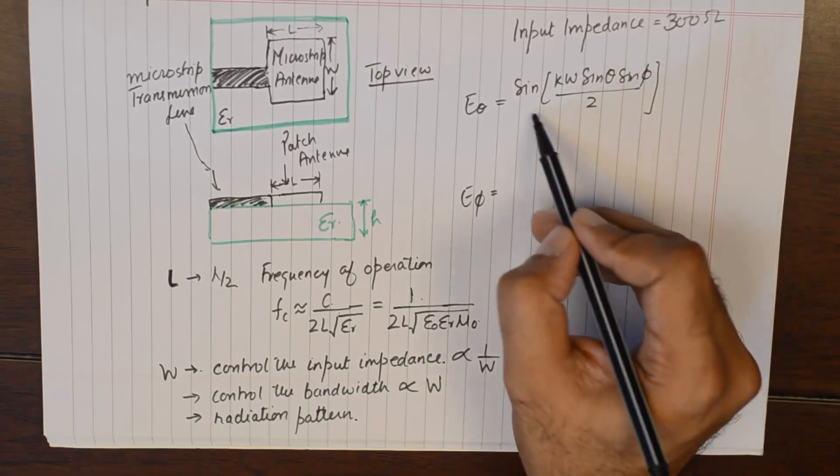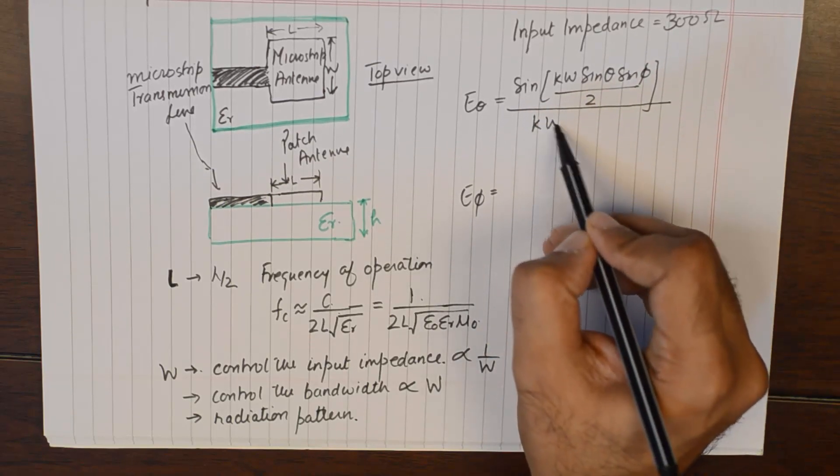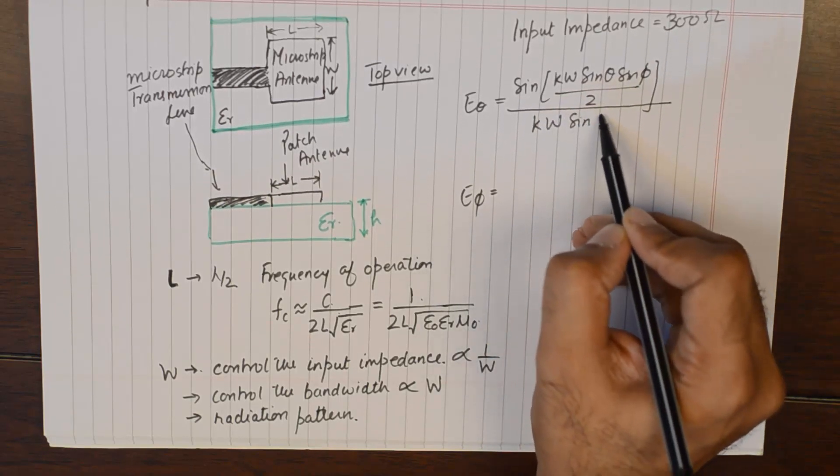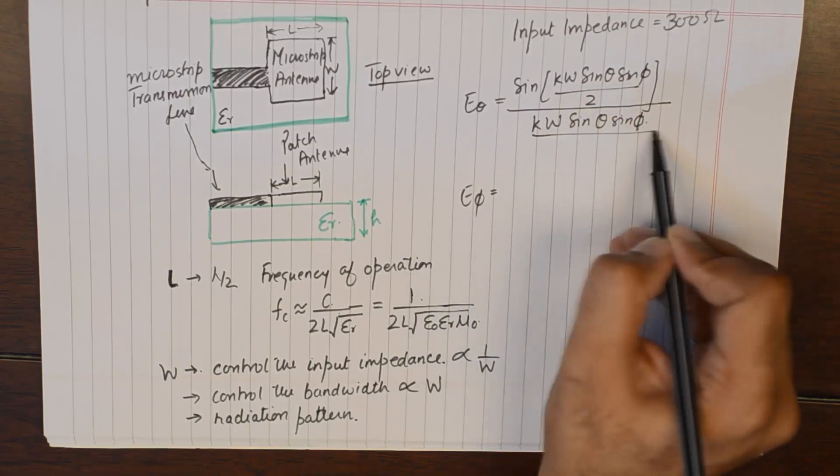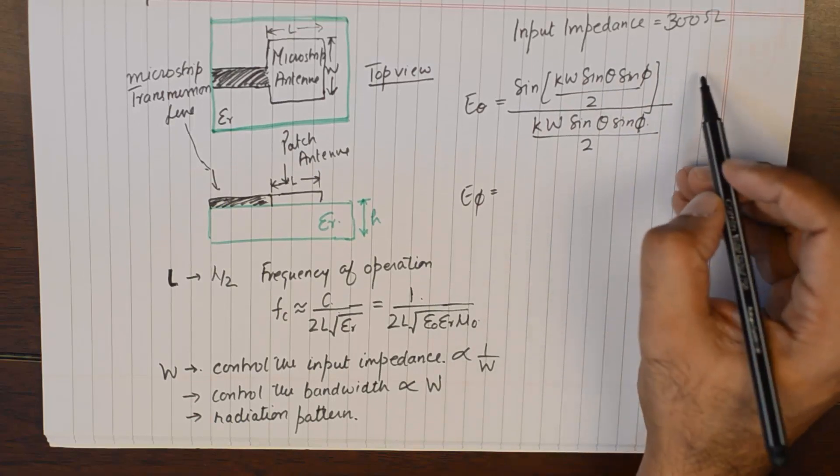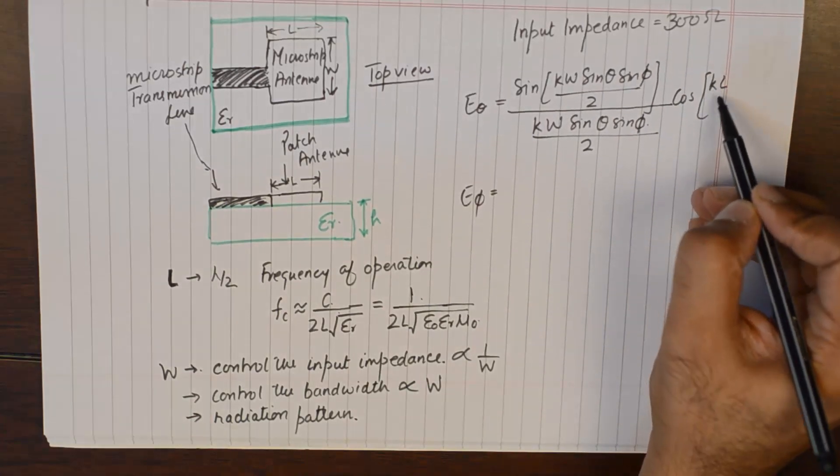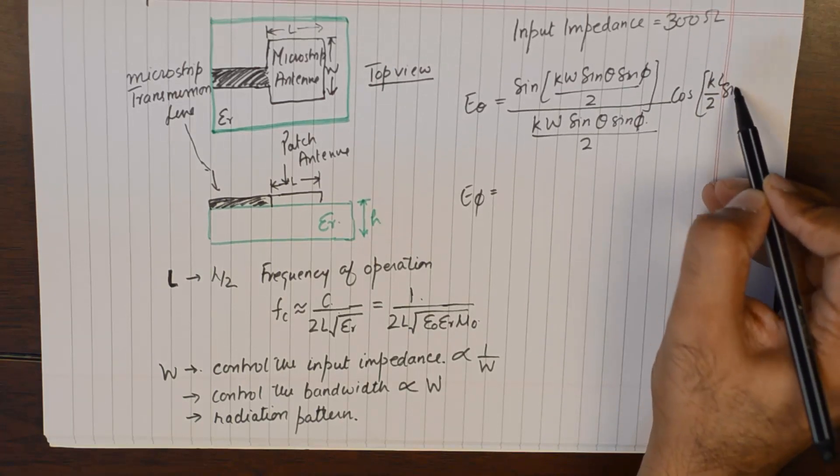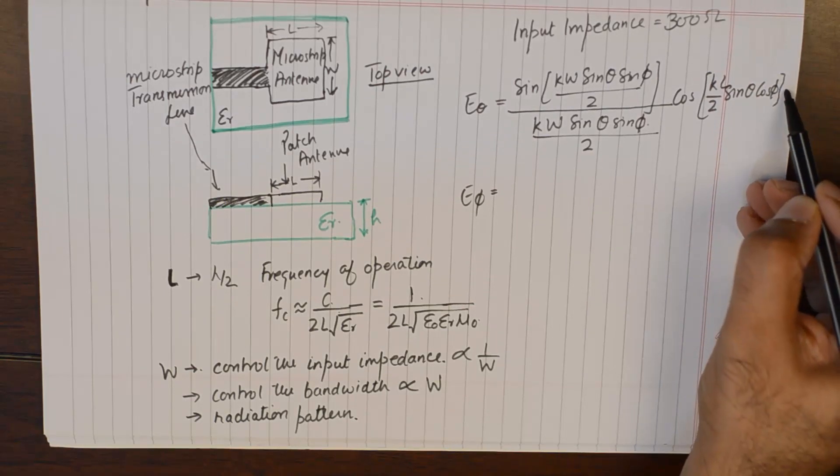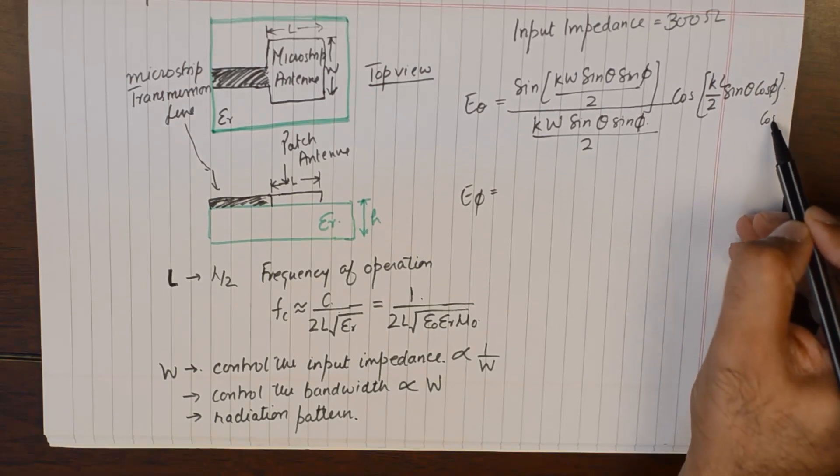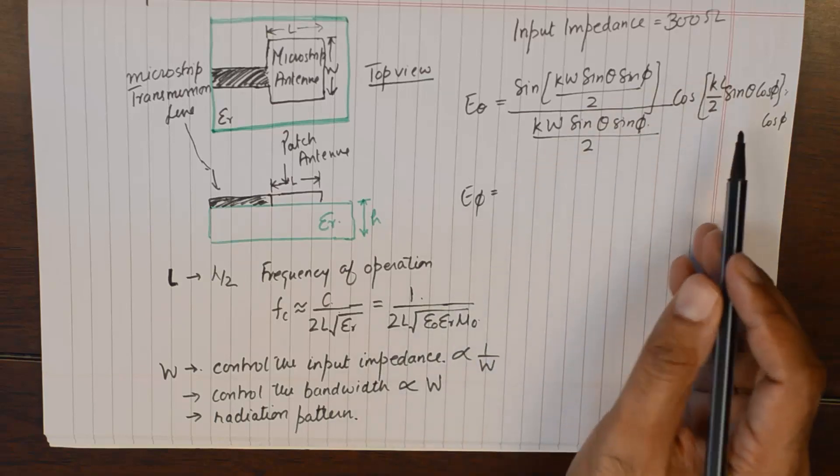It somehow depends upon the value of the width, although you find we have a cos of phi here that goes here.